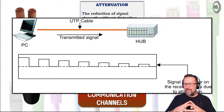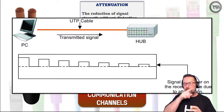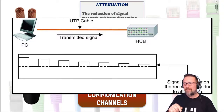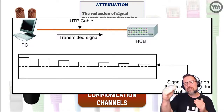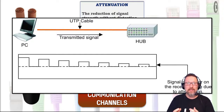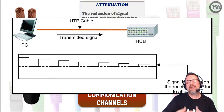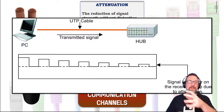Looking at the picture, you can see how signal strength is represented visually — it looks like a sine wave. As the signal travels further, the weaker it becomes; it begins to attenuate and degrade. By the time it reaches a certain distance from its source, it's no longer a strong enough signal.